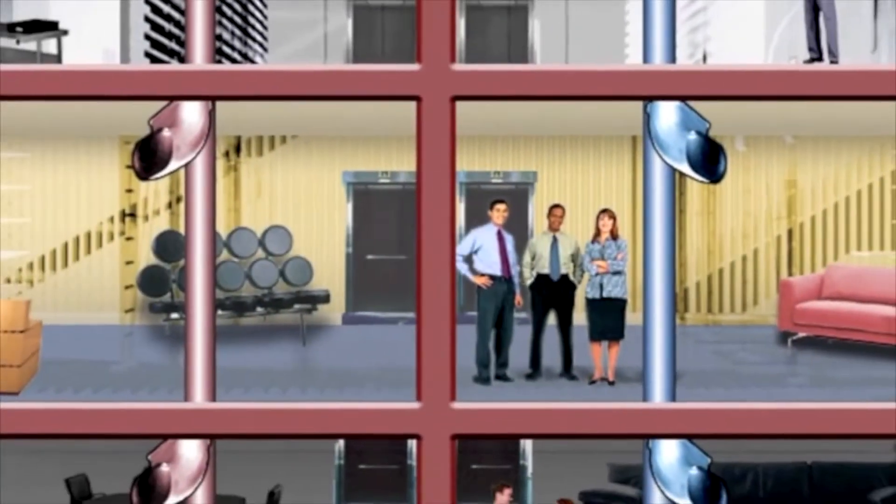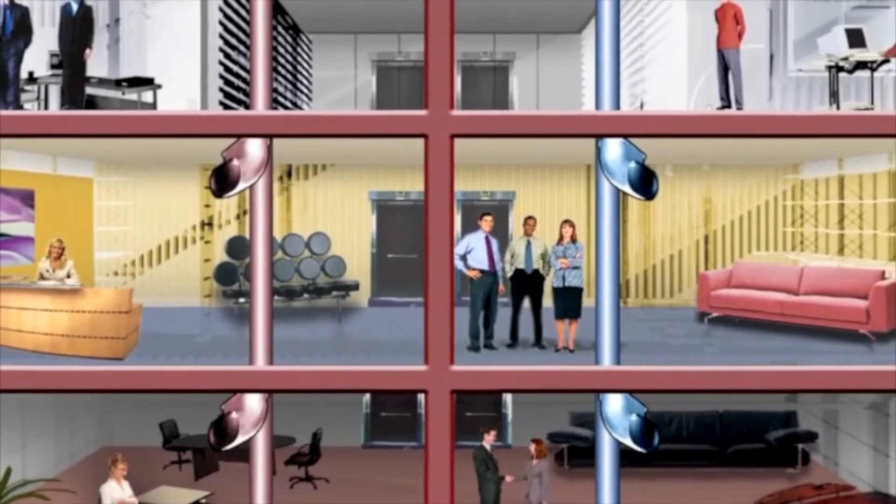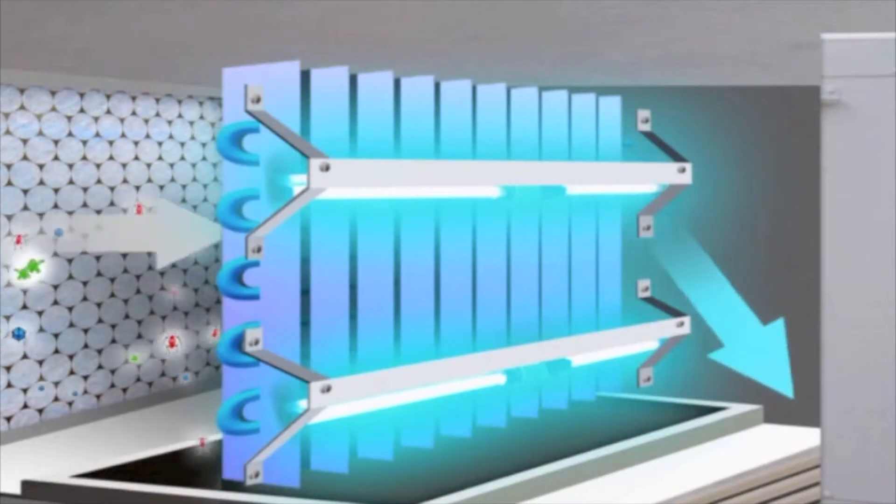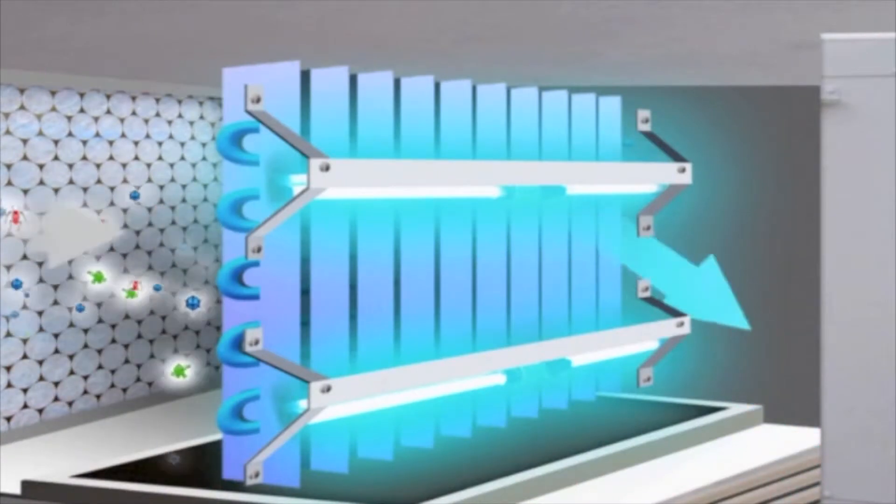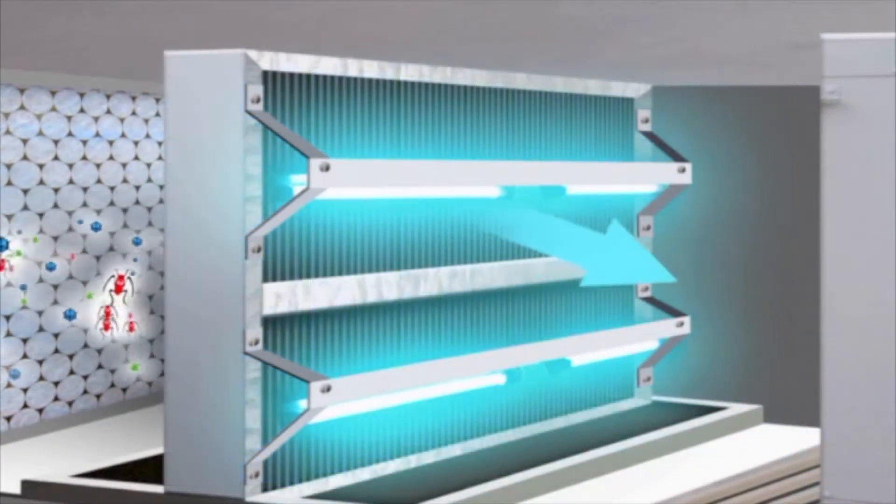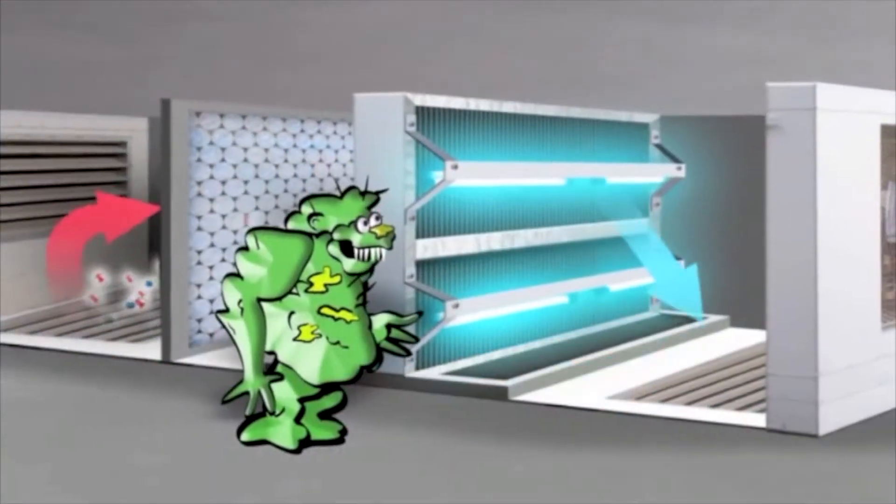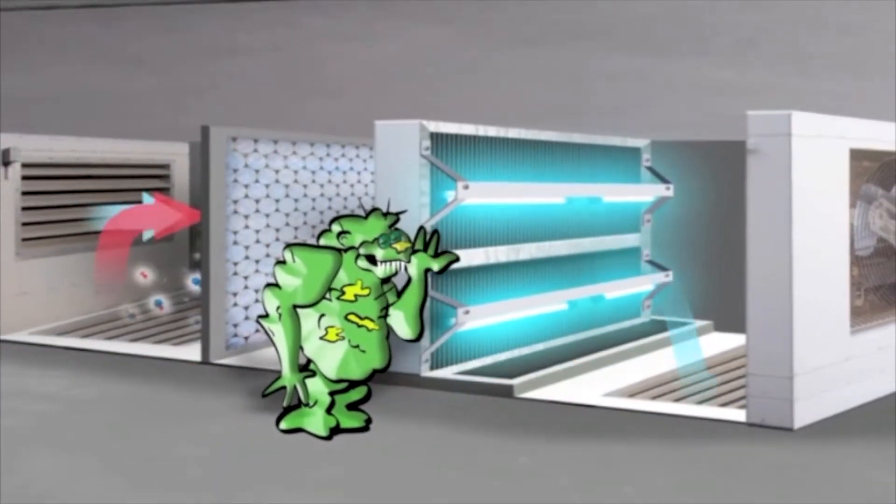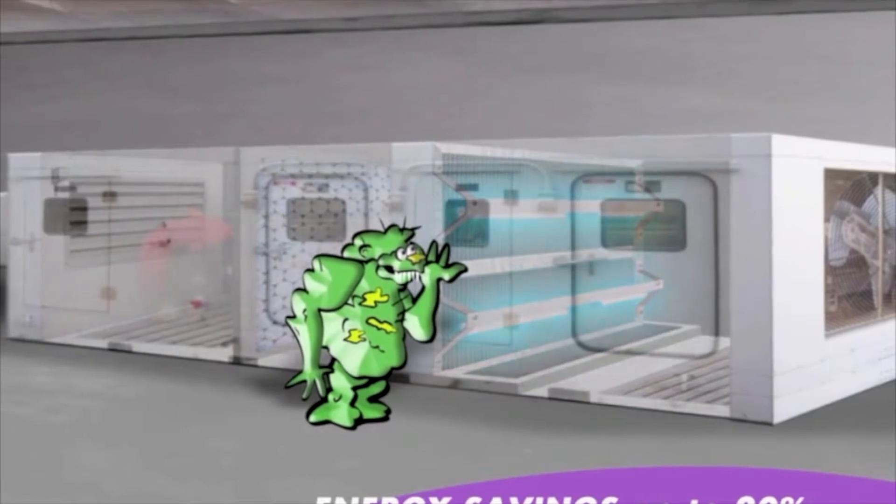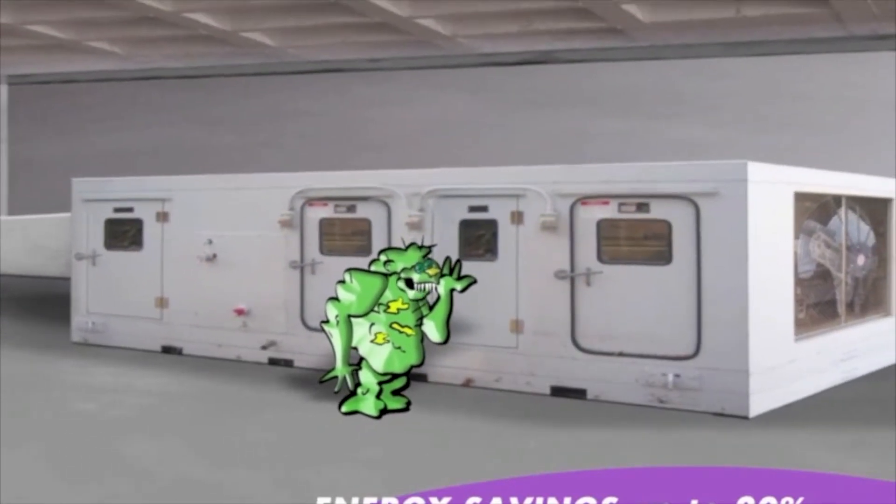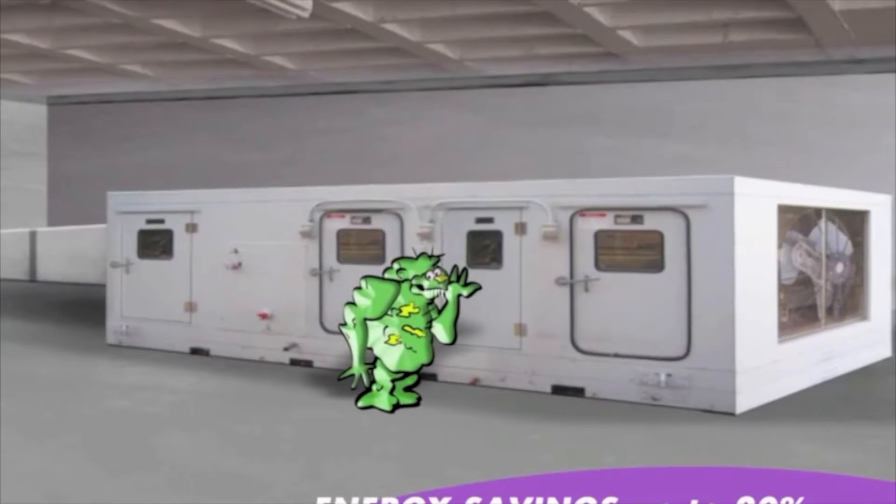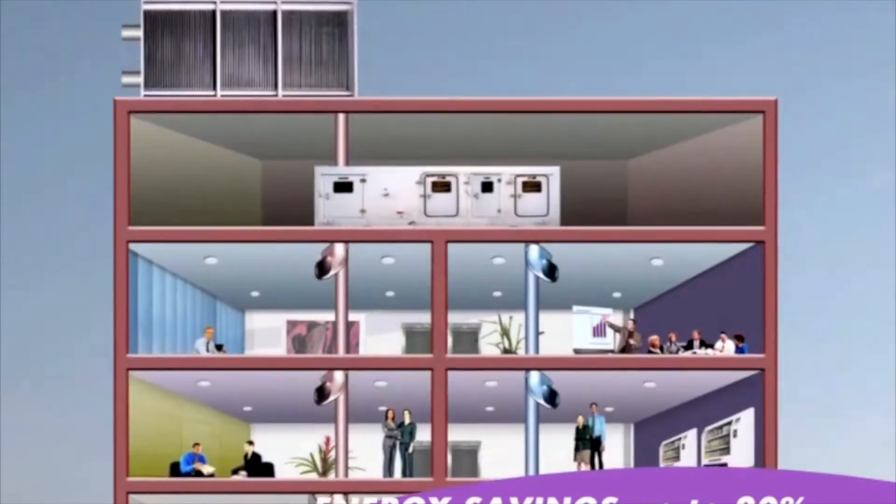Your occupants will feel better and be much more productive. Clean coil plates are more efficient at cooling the air and with more space between each plate, the air will flow more freely. The building management benefits from up to a 20% reduction in energy costs with additional savings from maintenance and cleaning labour.